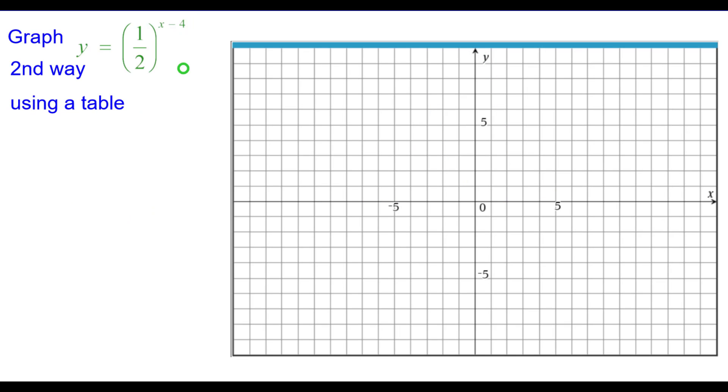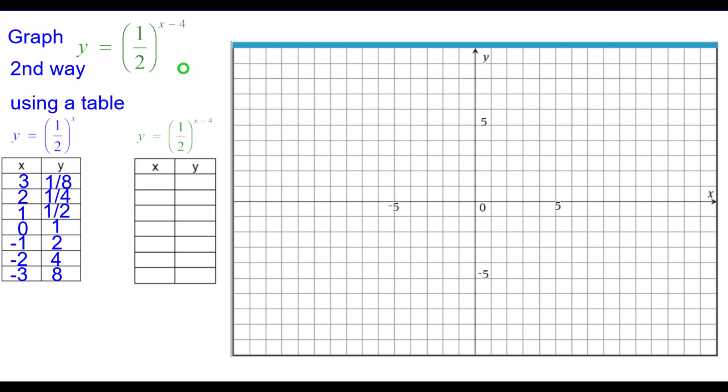The second way is using a table. So we'll start with y equals one-half raised to the x-power table. We will add 4 to each of the x-coordinates because of the minus 4 inside the function.